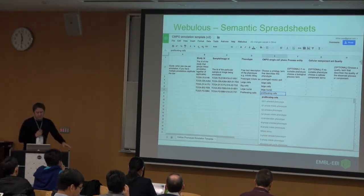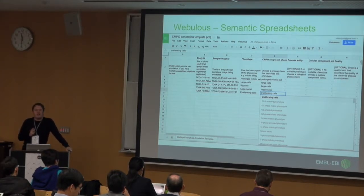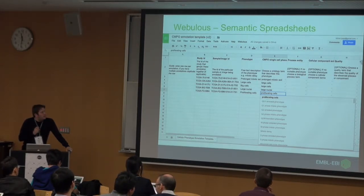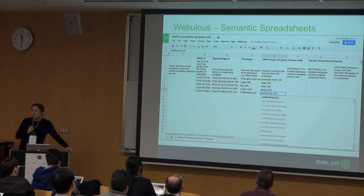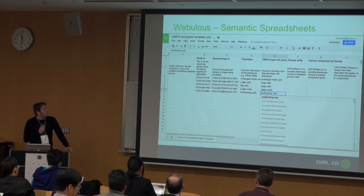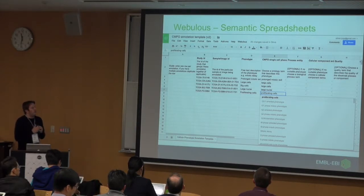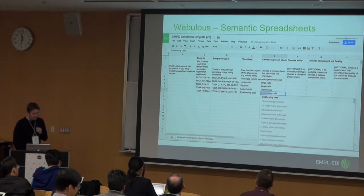Previously I was involved in a project called Rightfield, which was about getting biologists to annotate data upfront before submission. The Rightfield application allowed us to embed ontology terms within Excel spreadsheets. We're now working with the NCBO and the BioPortal team to extend this to work with Google Spreadsheets, so we can collect data and embed ontology annotation directly into Google Spreadsheets.